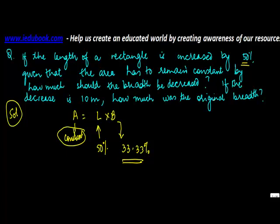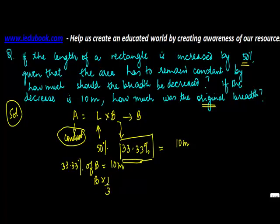Okay, if the decrease is 10 meters, how much was the original breadth? Now you are told that the decrease in the breadth is 33.33% - not told actually, you found it out - and this is equal to 10 meters. So let's call the breadth as B, and what we are given is that 33.33% of B is equal to 10 meters. So B times 1/3 - 33.3% can be written as 1/3 - is equal to 10, which implies that B is equal to 3 times 10, is equal to 30 meters. So the original breadth was 30 meters.